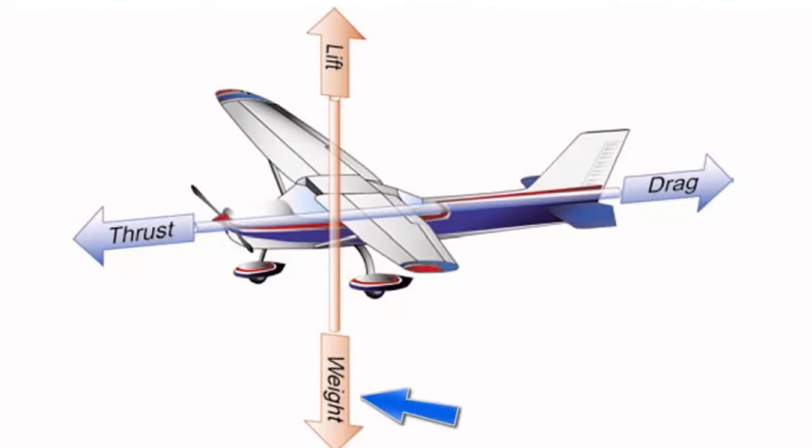Weight pulls the aircraft downward because of the force of gravity. It opposes lift and acts vertically downward through the aircraft's center of gravity. Thrust is the force developed by the rotor blades acting parallel to the relative wind and opposing the forces of drag and weight.